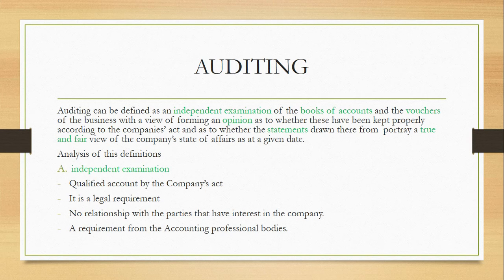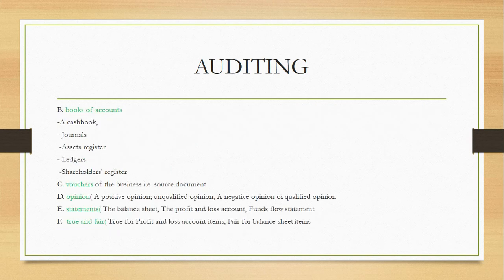In this definition, the books of account referred to include, for example: cash books, ledgers, asset ledgers, journals, and shareholders registers. Those are the books of account. The vouchers of the business stated in the definition, which are also going to be examined, are source documents such as purchase invoices, sales invoices, receipts, and bank slips.